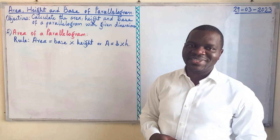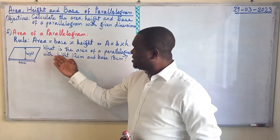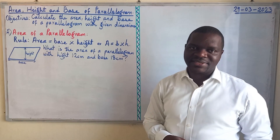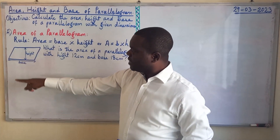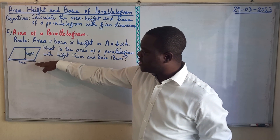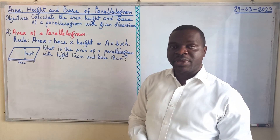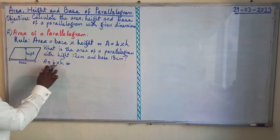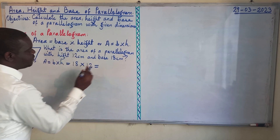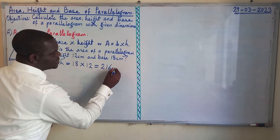Let's look at our first example and apply this rule. What is the area of a parallelogram with height 12 centimeters and base 18 centimeters? The distance that connects the two parallel sides is the height, and on the lower side we have the base. Area is base times height: 18 cm × 12 cm = 216 centimeters squared.